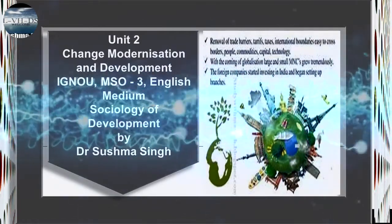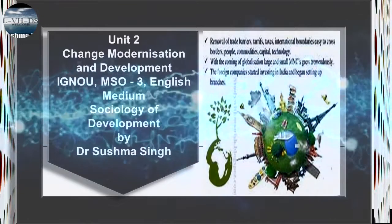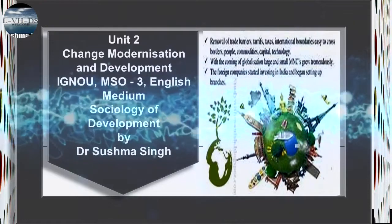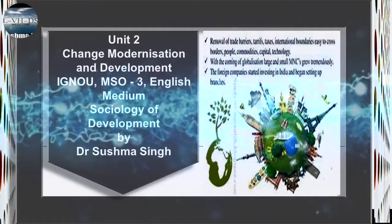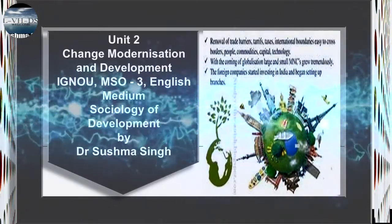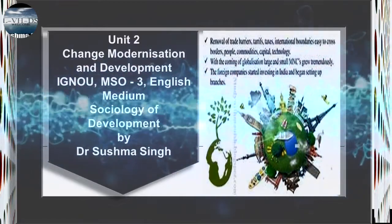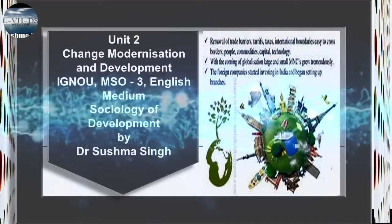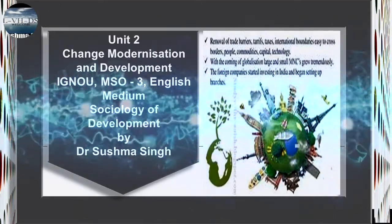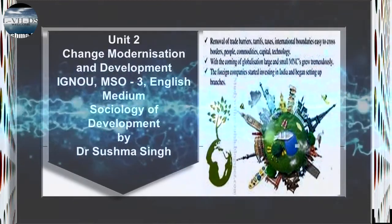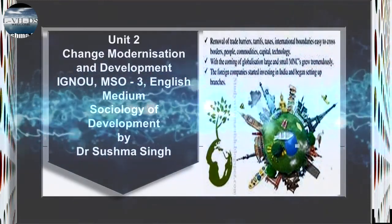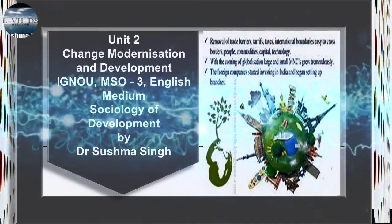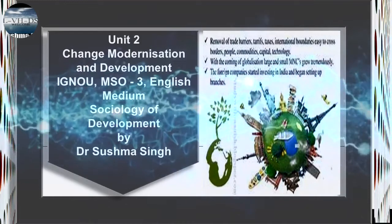Similarly, the onset and speed of social development depends on the seeding of new ideas in society, awareness of new opportunities, social aspirations and attitudes to change, the catalytic role of individuals, the presence of essential resources and instruments, the frequency and intensity of social interactions, and social preparedness and support for new activities.